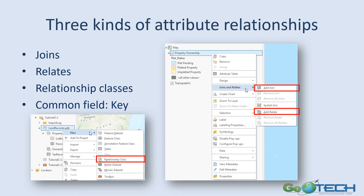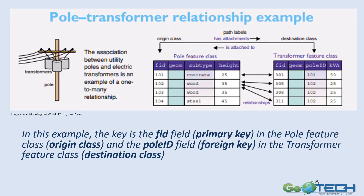This common field could be of the text data type or numeric data type. We're going to look at Joins, Relates, and Relationship classes in greater detail in the rest of this presentation. But before we do that, let's look at an example of the key that I talked about.